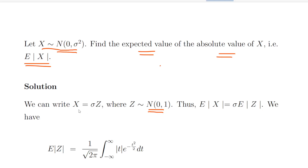To simplify, we let X equal sigma times Z, where Z is the standard normal random variable with mean zero and variance one. Since for X the mean mu is zero, we can say that E[|X|] is equal to sigma times E[|Z|]. So we first find E[|Z|] and then multiply by sigma afterwards.